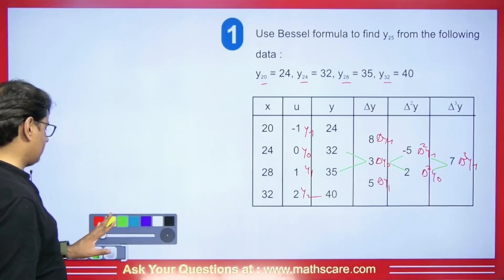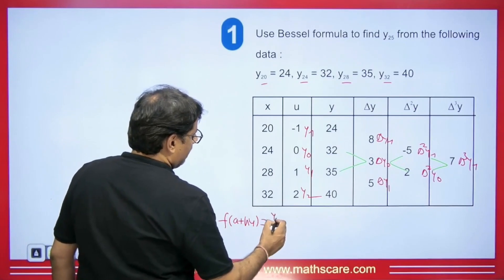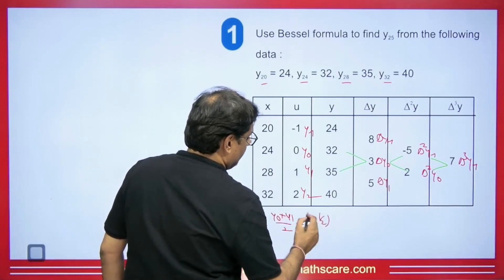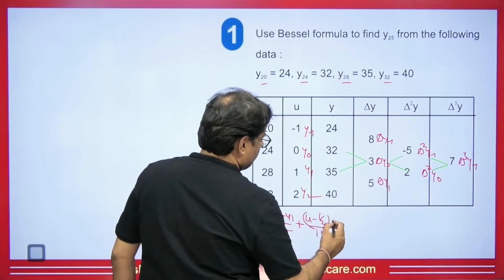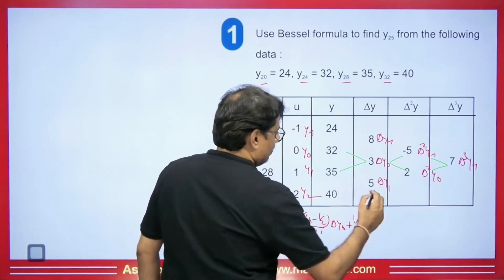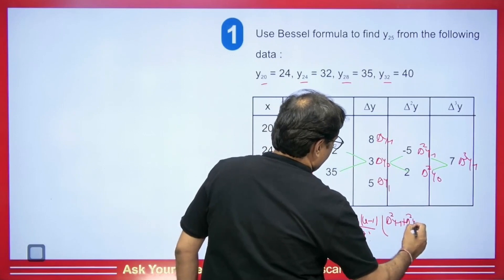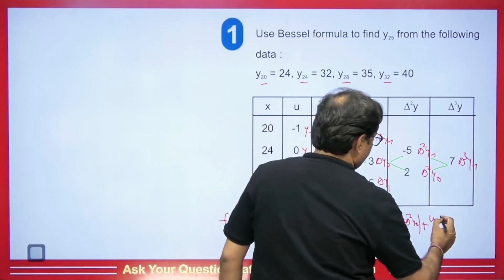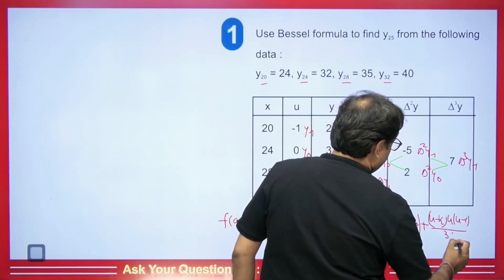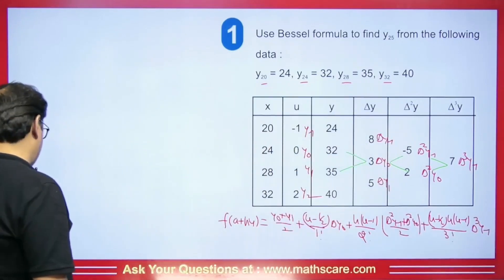The Bessel formula is: F(A + HU) equals Y0 plus Y1 divided by 2, plus (U minus 1/2) upon 1 factorial times del Y0, plus U(U minus 1) upon 2 factorial times the average of del squared Y minus 1 plus del squared Y0 upon 2, plus (U minus 1/2) times U times (U minus 1) upon 3 factorial times del cubed Y minus 1.